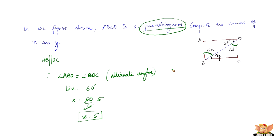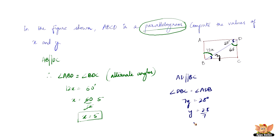Now we need to compute the value of Y. Apart from AB being parallel to DC, we also have AD parallel to BC. The transversal BD intersects them, so we can say angle DBC equals angle ADB. Therefore, 7Y equals 28 degrees, and Y equals 28 divided by 7, which gives Y equals 4. Hence, the values of X and Y are 5 and 4 respectively.